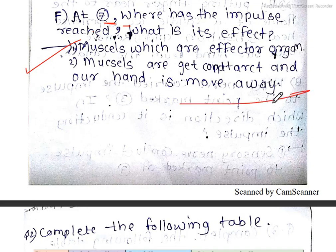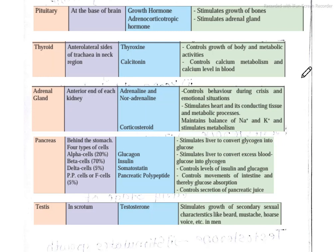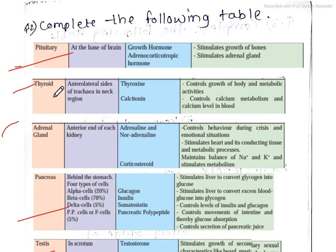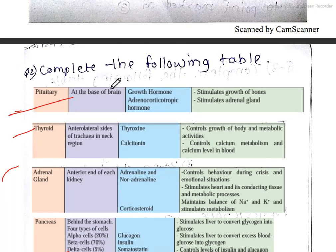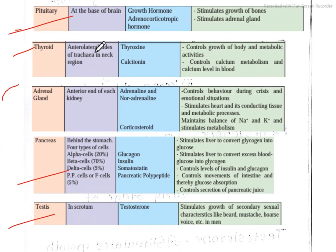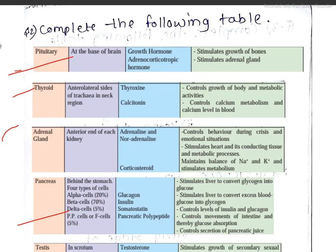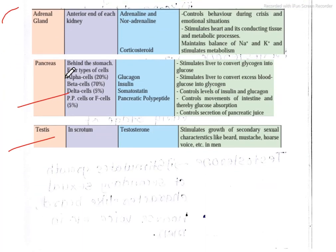Next, question number two: Complete the following table. Now you have this table. We have pituitary gland, thyroid gland, adrenal gland, pancreas, and testes. You can locate it at the bottom of your body. You can type in short cards. Next, the book is available, so please go through the book. In the book, you have provided information that you can sort out.